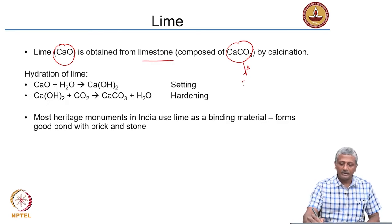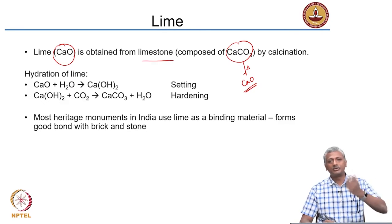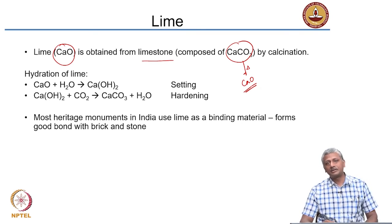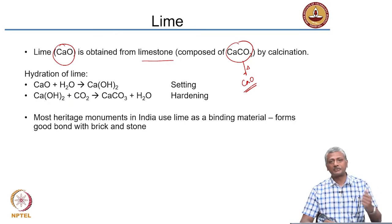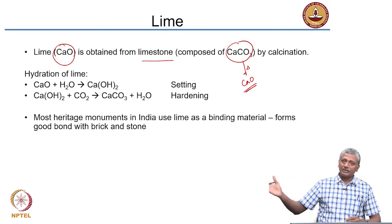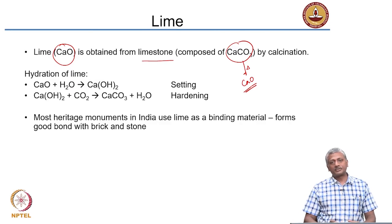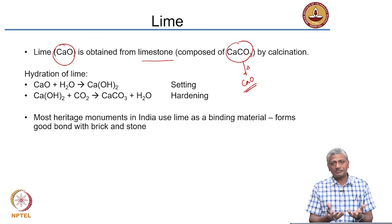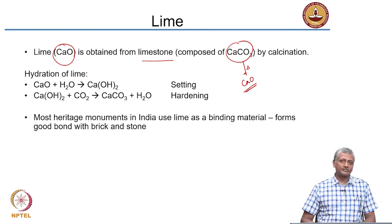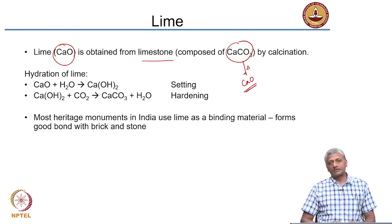Lime is basically calcium oxide (CaO), obtained from limestone which is calcium carbonate (CaCO₃). When you burn or heat calcium carbonate, CO₂ is removed and you get calcium oxide. Please remember that whenever you burn limestone, you emit carbon dioxide into the atmosphere — so production of lime from limestone is a polluting process in that regard. The same is true with cement manufacture, since limestone is the primary ingredient for cement. The building industry is responsible for nearly 20 percent of CO₂ emissions across the world — that is everything combined, not just cement and lime.